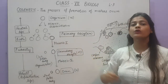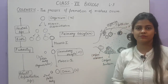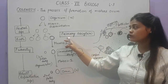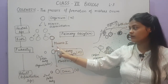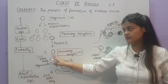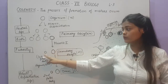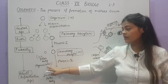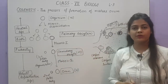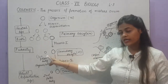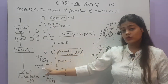When these primary oocytes undergo meiosis 1 — meiosis happens here because to form a gamete we must reduce the number of chromosomes. One primary oocyte undergoes meiosis 1 to form two cells. One is a smaller cell called the polar body, which will undergo degeneration, and the other is a bigger cell called the secondary oocyte. So primary oocyte → meiosis 1 → one polar body (smaller) + one secondary oocyte (bigger).